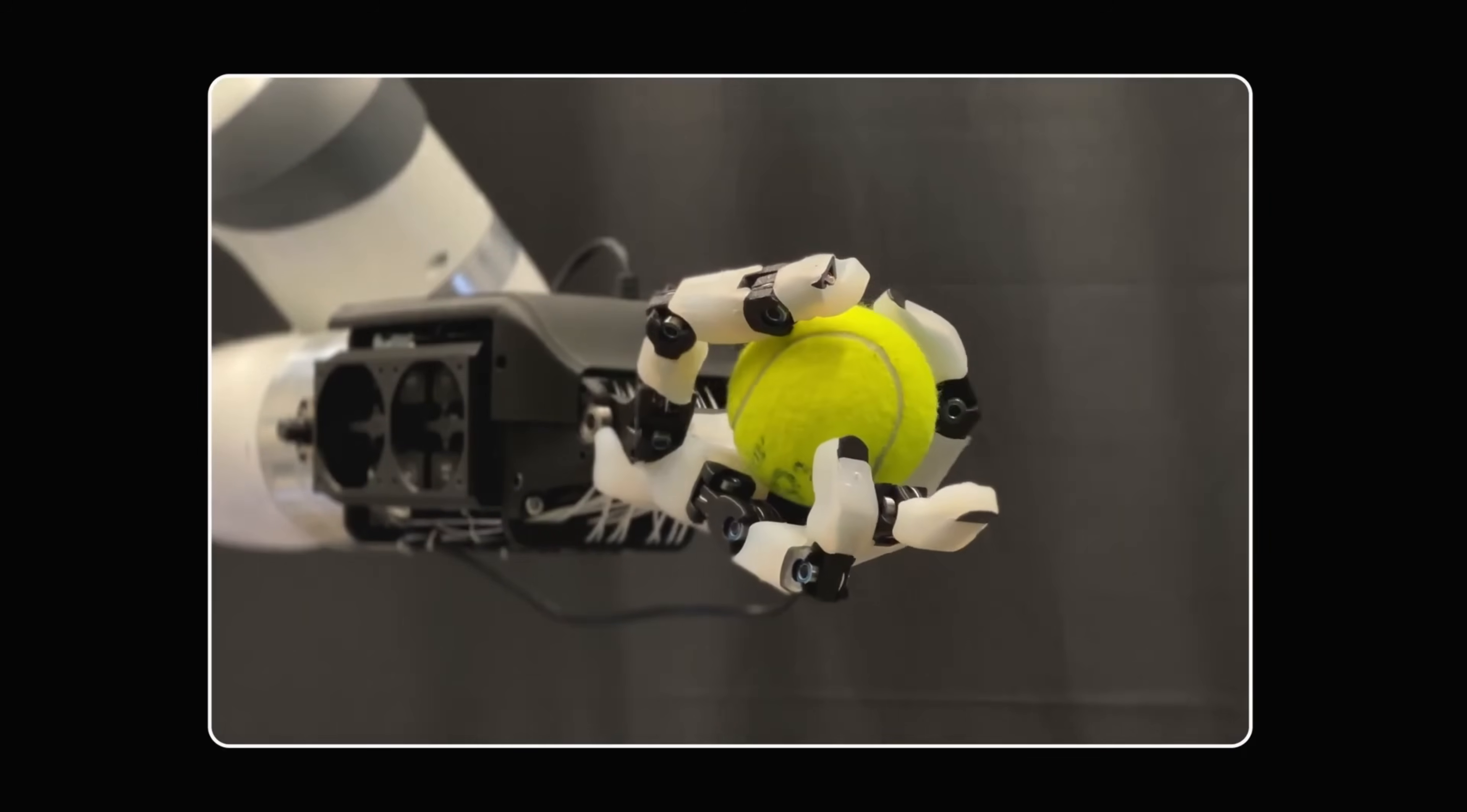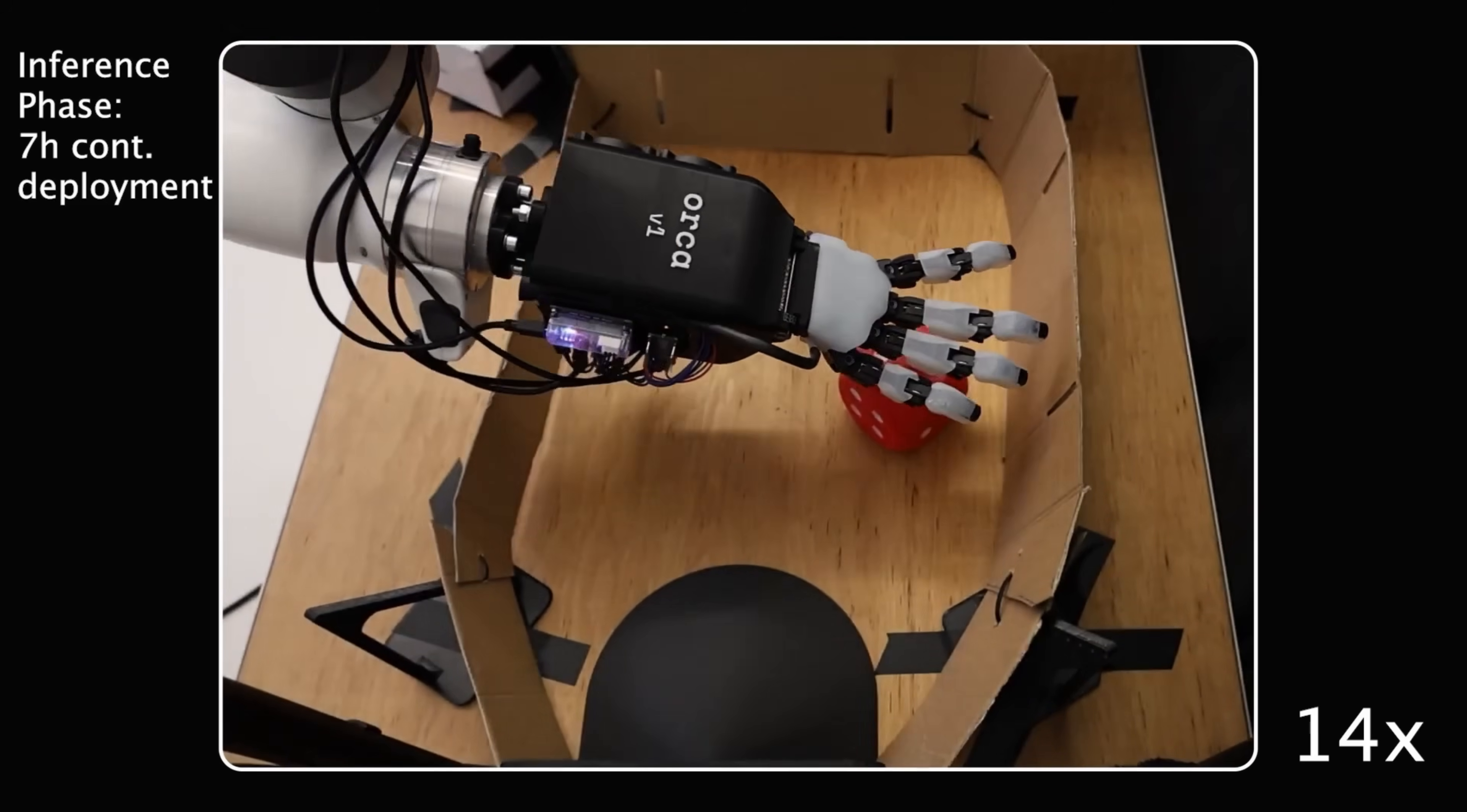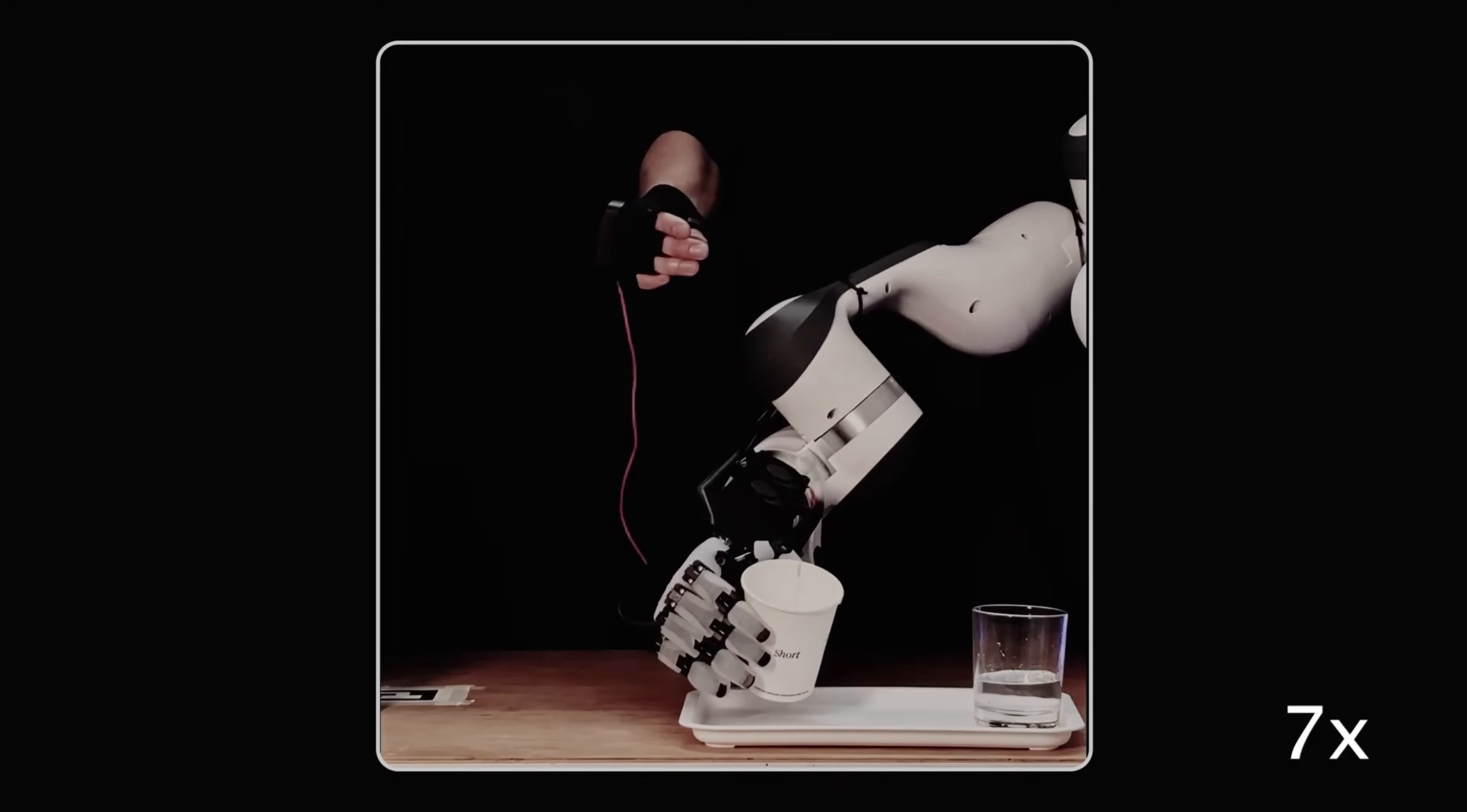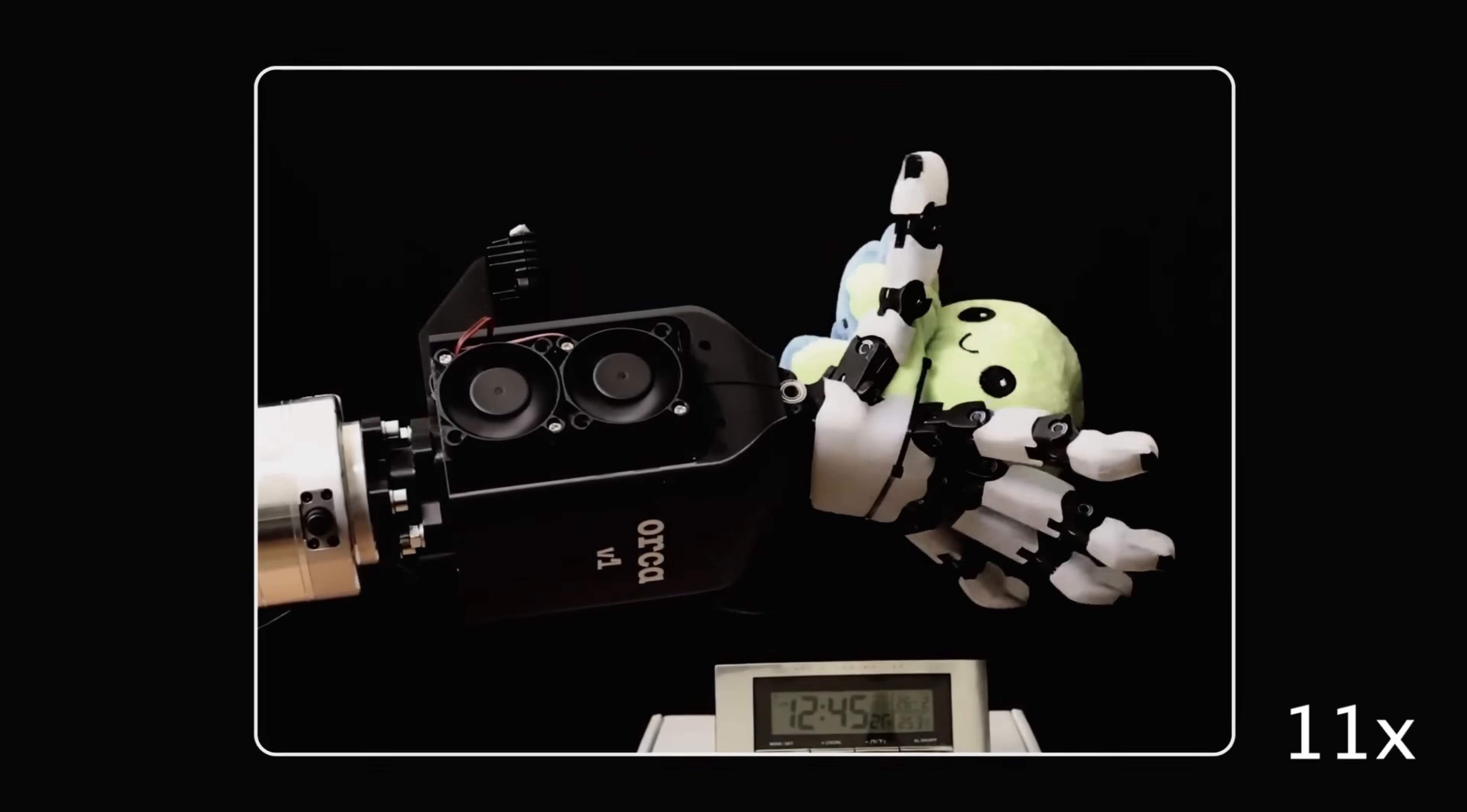The Orca Hand integrates tactile sensors on all fingertips and supports a wide range of tasks, from teleoperation to imitation learning, making it a versatile, cost-effective, and robust solution for robotic manipulation and research.